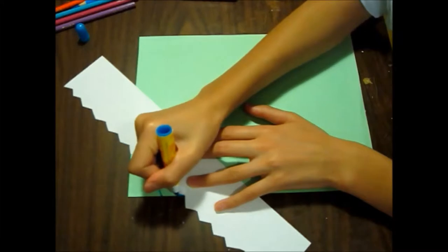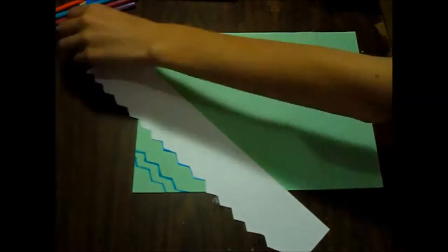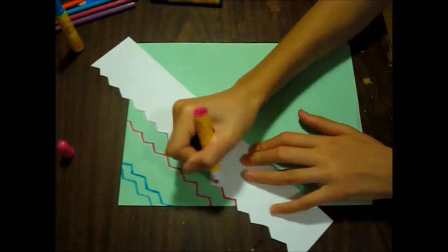Now take the zigzag stencil, take one marker, and trace along the lines. Continue doing this with all of your other colors.